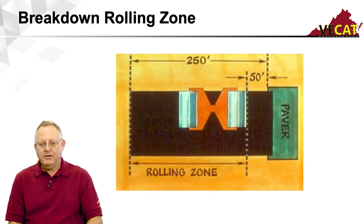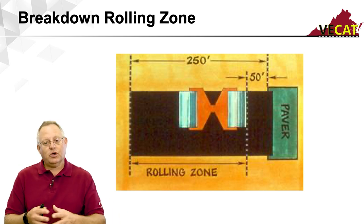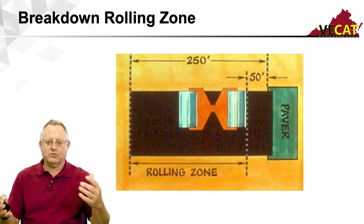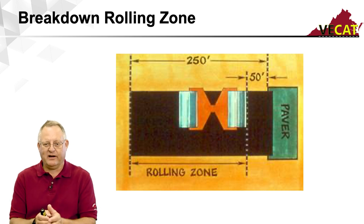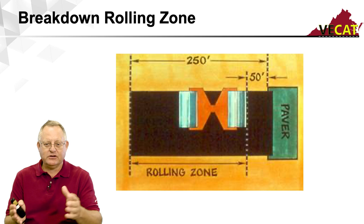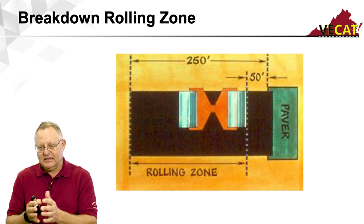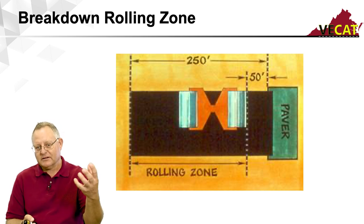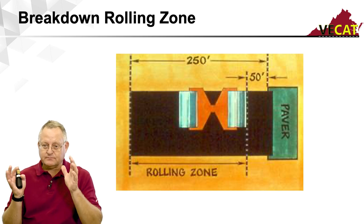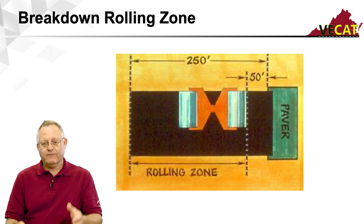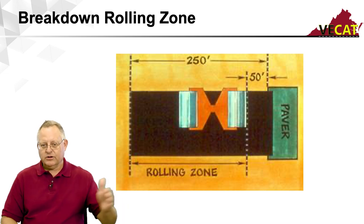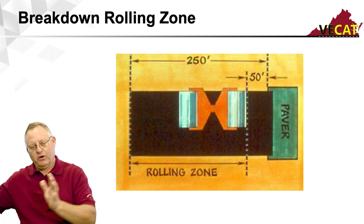During breakdown rolling, we have a rolling zone. We want to get the first roller on the mat as soon as the paver goes by to start initial compaction when the mat is at its hottest. Typically there's about a 50-foot buffer from the paver screed, though that distance varies depending on outside temperature and base temperature — if it's cooler, the surface pulls heat out of the mat faster and the roller may be closer. The typical paving zone is about 250 feet behind the paver screed. As the paver moves down the road, the roller zone moves with it.